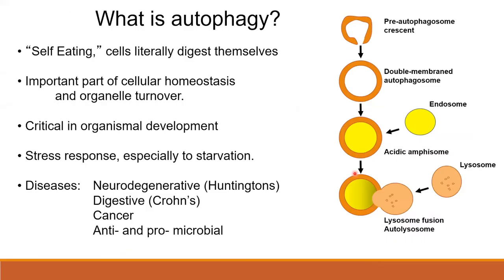These double-membrane structures are known as autophagosomes, and they're observed during infection with most of the picornaviruses we've tested. The virus is radically changing the interior structure of the cell. This process — autophagy, literally 'self-eating' — is how cells digest themselves, turn over their internal organelles, and maintain homeostasis. It's critical during organismal development and stress response, and it's associated with neurodegenerative disease, digestive diseases, cancer, and is known to be both anti- and pro-microbial.